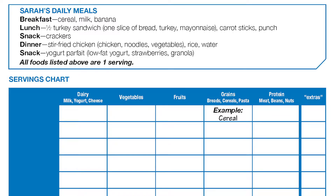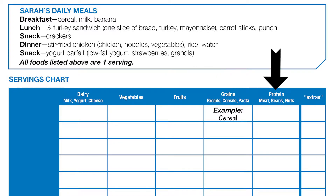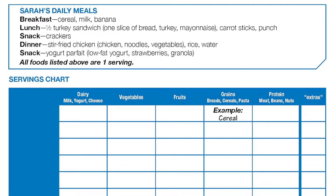We're going to go through every item and you all will place the food item in the correct place. Once you fill out the chart, you're going to add up what Sarah had for dairy, vegetables, fruits, grains, protein, and extras to see if she met the recommended amount of servings for the five food groups. Each food item is going to take up one box in the chart.